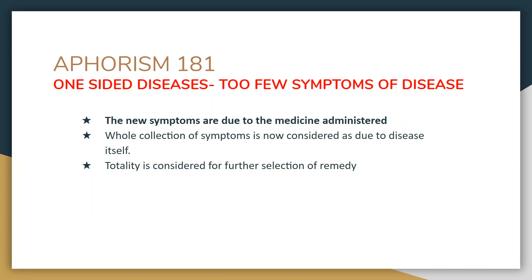Aphorism 181: one-sided diseases with too few symptoms. The new symptoms which arise in the patient are due to the medicine administered — this medicine is the partially similar medicine. Hence it is able to remove few symptoms and few new symptoms may arise. The whole collection of symptoms is now considered as due to the disease itself. We take the remaining symptoms of the patient plus any new symptoms added because of the medicine administered, and construct the totality further for selection of a different remedy.